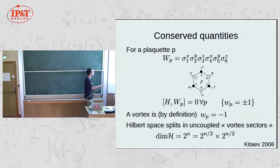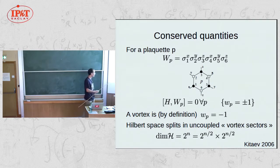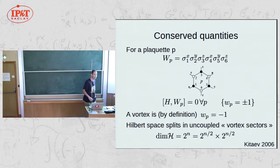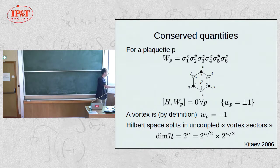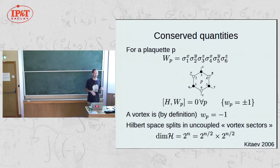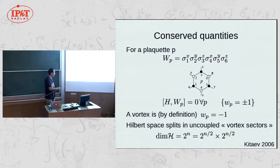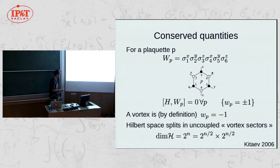An important property of this model is that for each hexagonal plaquette there is a conserved quantity, which is the product of six spin operators around it. This commutes with the Hamiltonian for every plaquette, meaning the Hilbert space separates into uncoupled sectors. In each sector we assign the eigenvalue of this operator W_p, which takes value either +1 or -1. By definition, a vortex is a plaquette where W_p equals minus one, and a vortex sector is a pattern specifying for each plaquette whether there is a vortex or not.